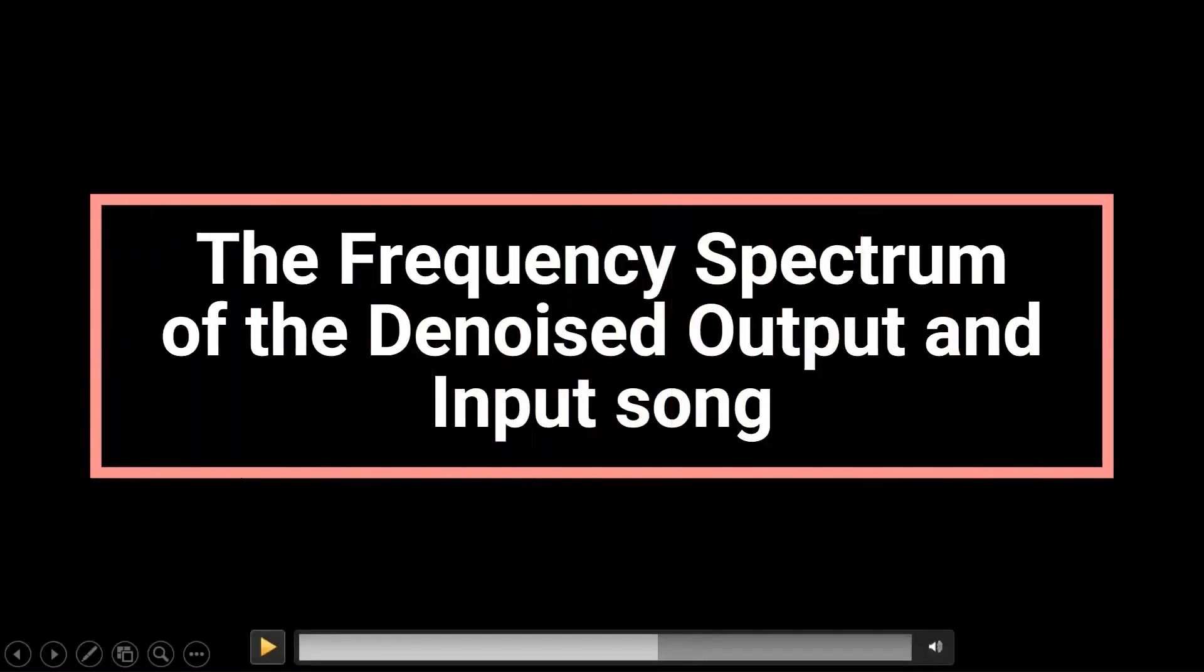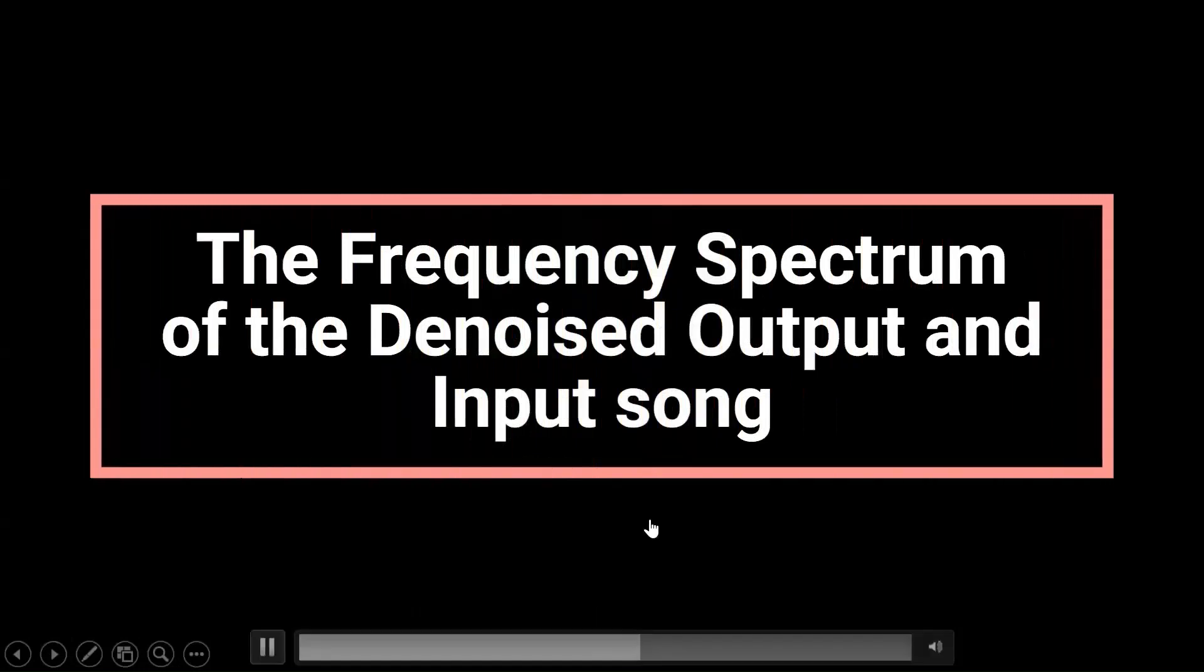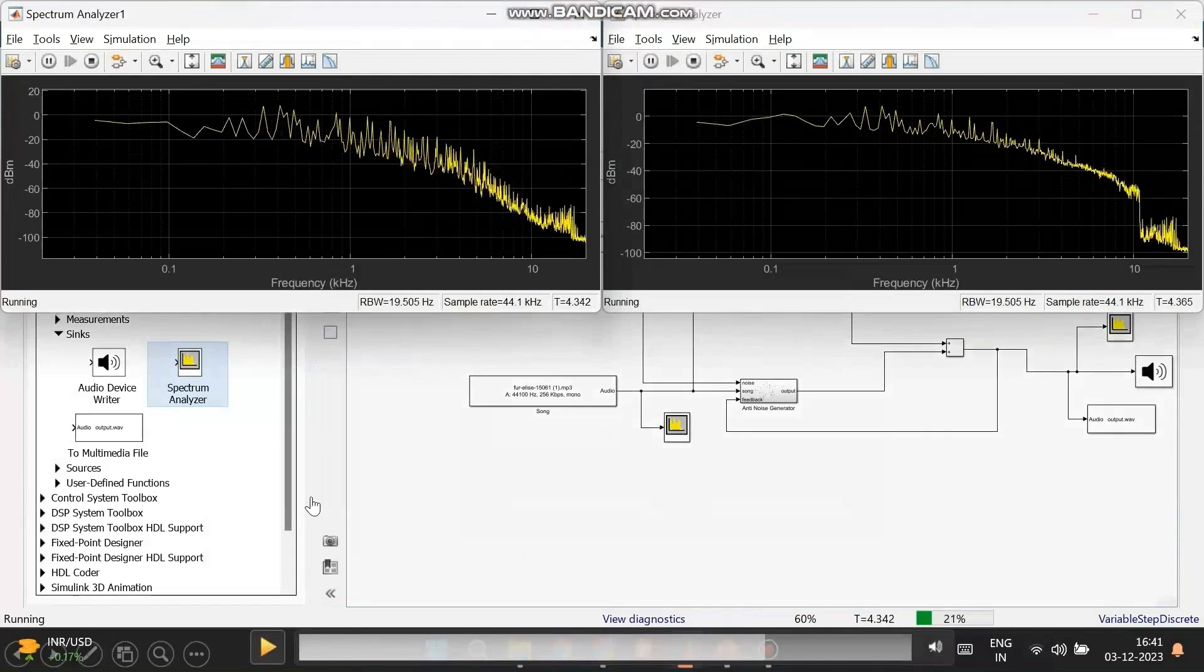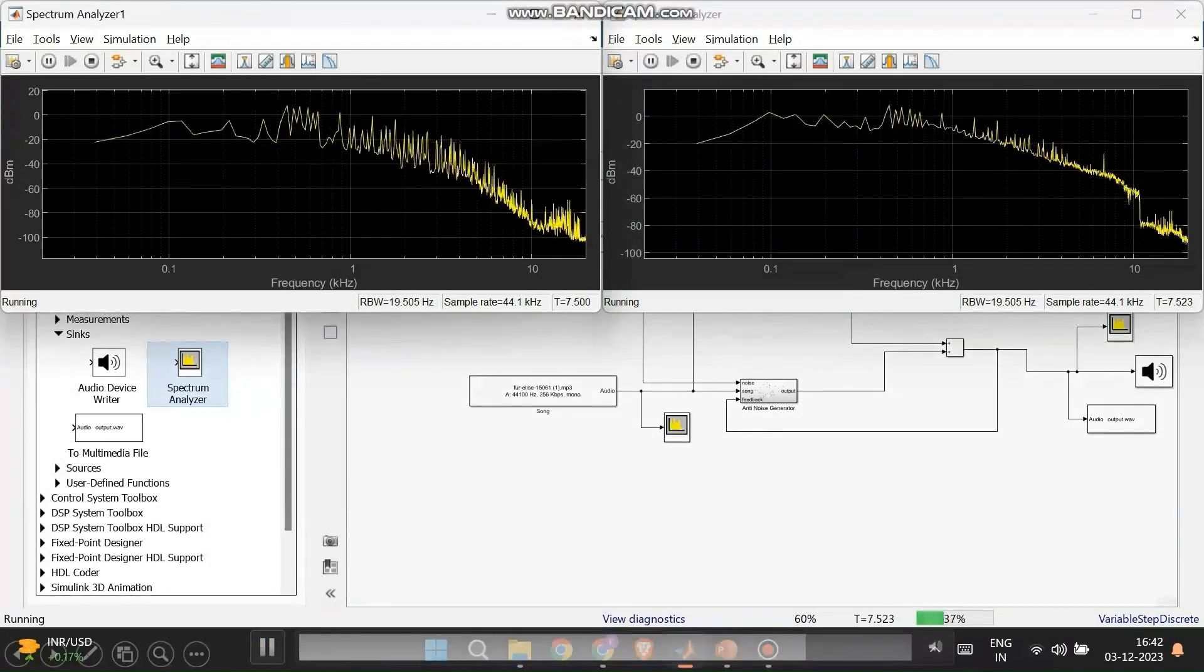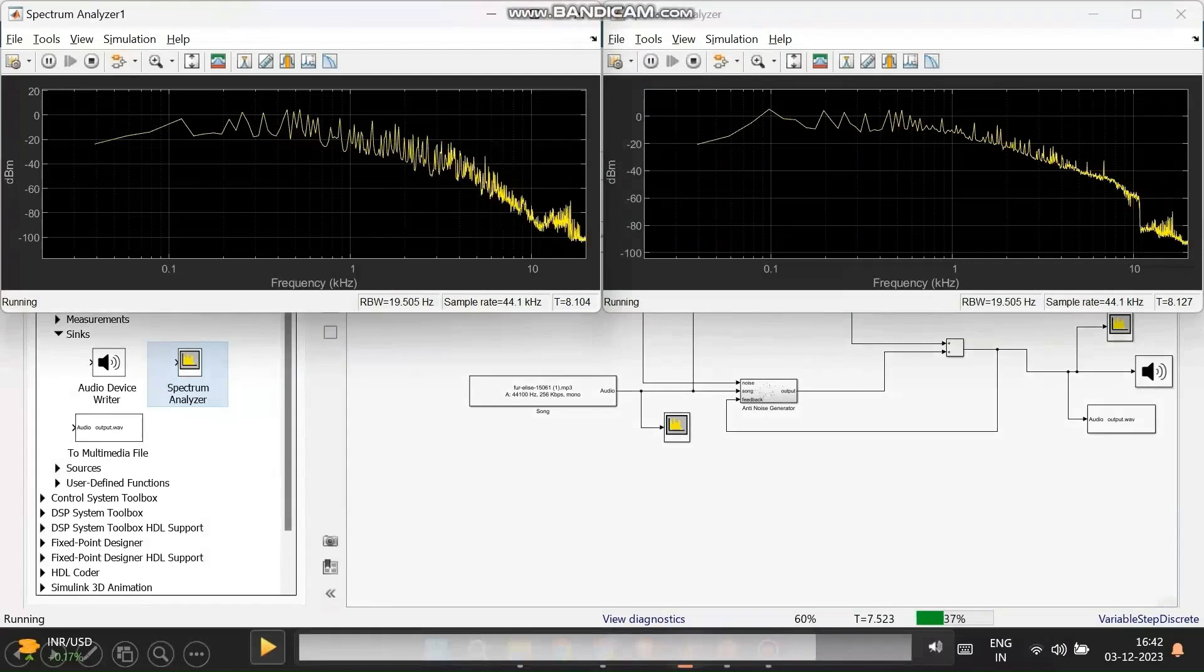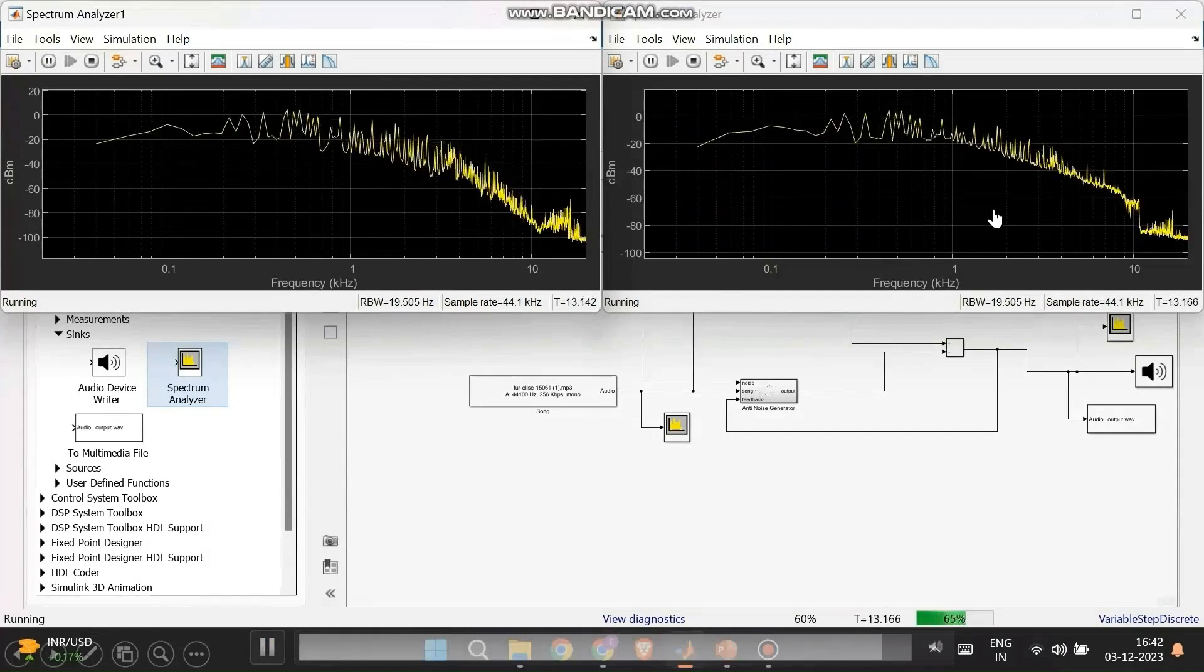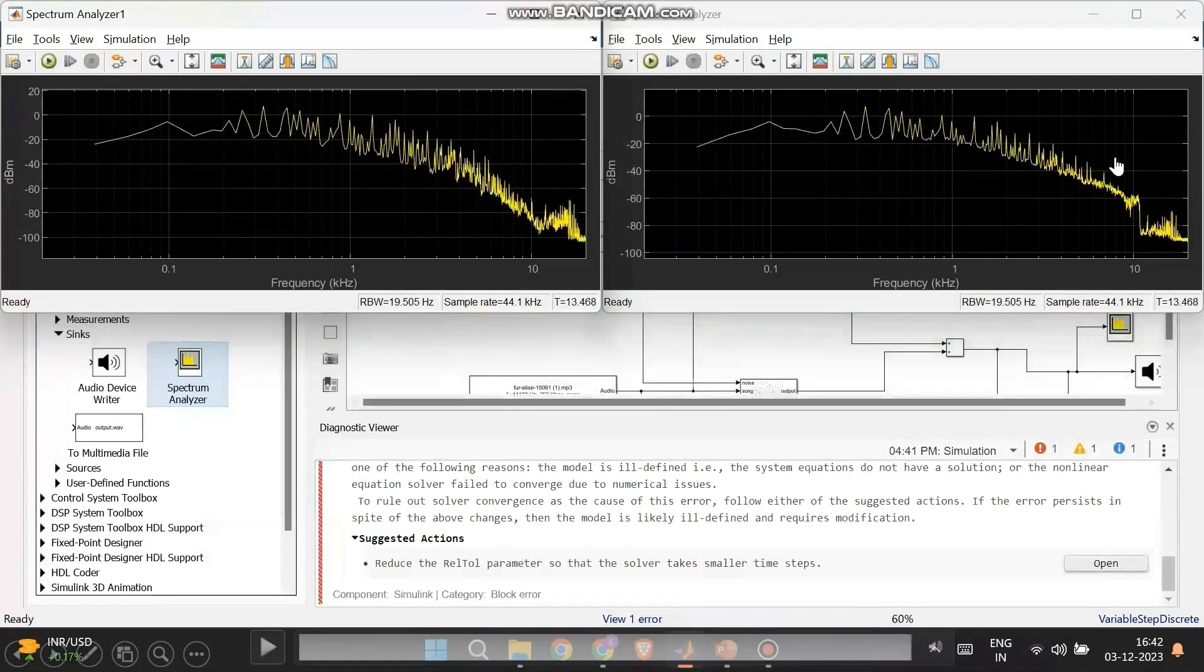Now, let us see the spectrum of the denoised and input signal. This is the actual audio and this is the denoised signal. As you can see this is very flat at the start because our active gain is small, and as time increases our active gain becomes more and more accurate and the error decreases. So, it becomes more similar. See at the edge there are more spikes in both, almost similar.